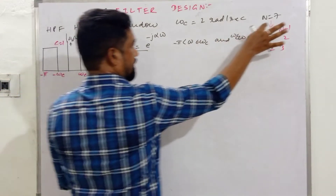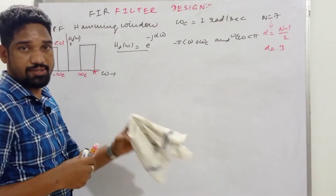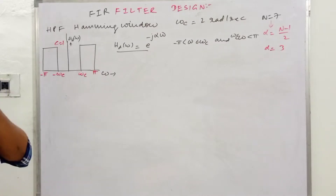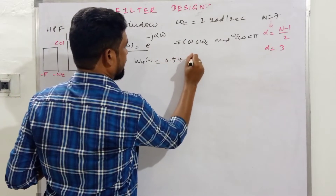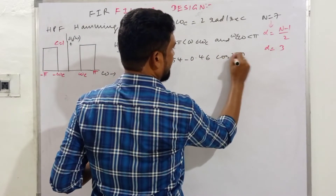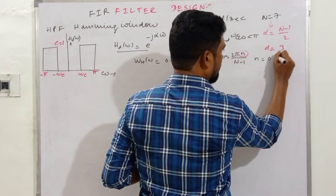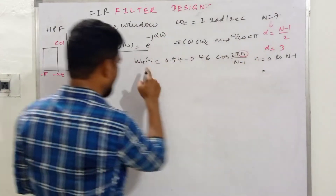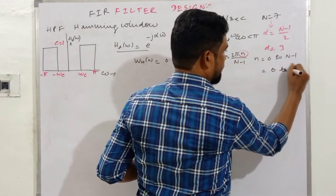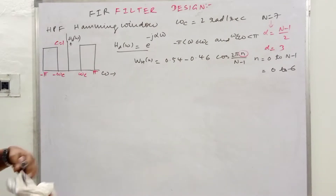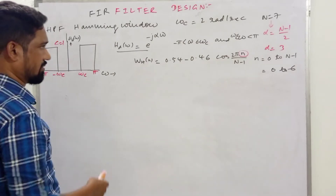The Hamming window sequence w_H(n) = 0.54 − 0.46 cos(2πn / (N−1)), where n runs from 0 to N−1. Since N = 7, we evaluate w_H(0), w_H(1), through w_H(6). Students often have trouble with the computation, so care is needed.